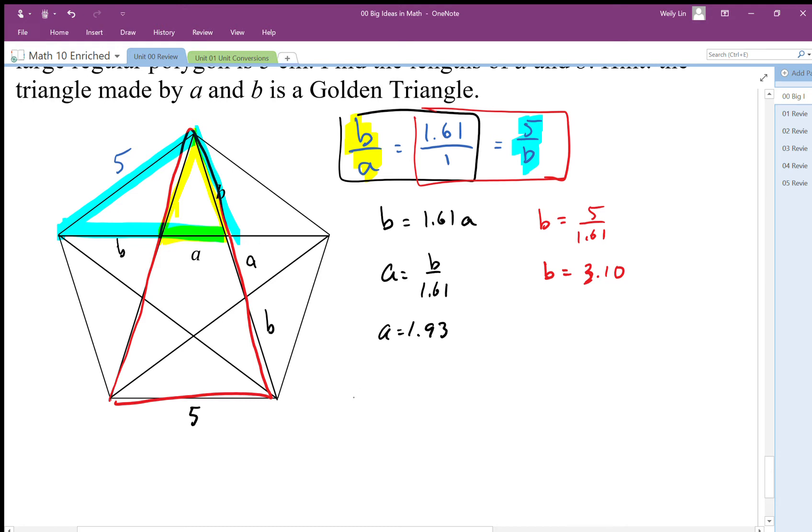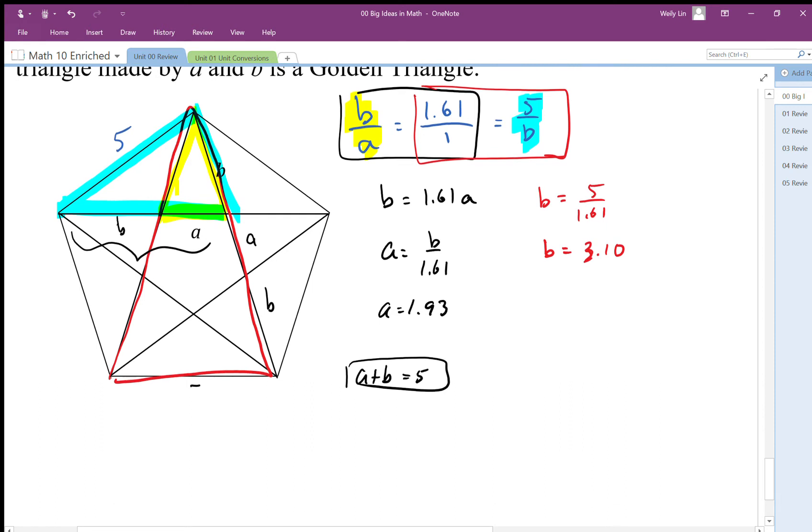We also know that this length a plus b is equal to 5. So a plus b equals 5, that's key. I'll just show that here: a plus b equals 5. Then we can set up some relationships.